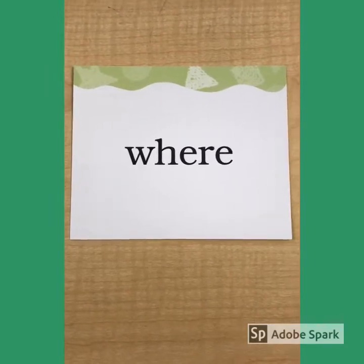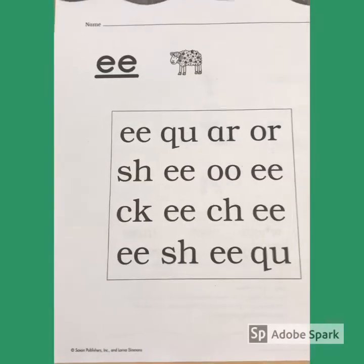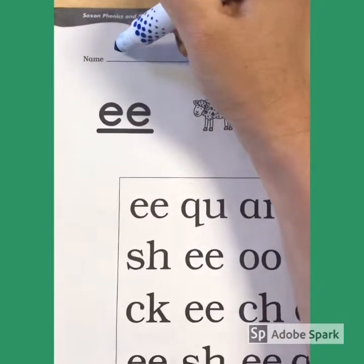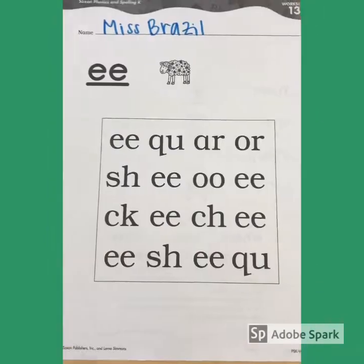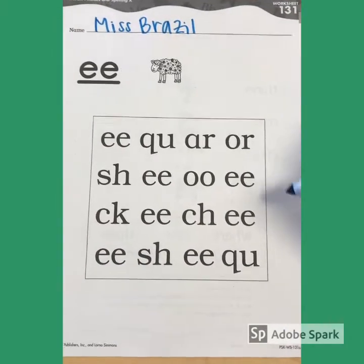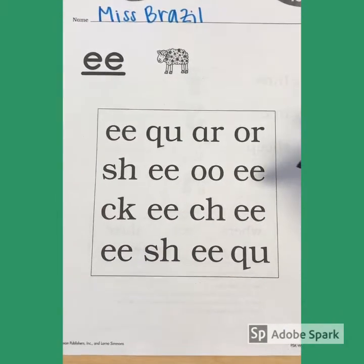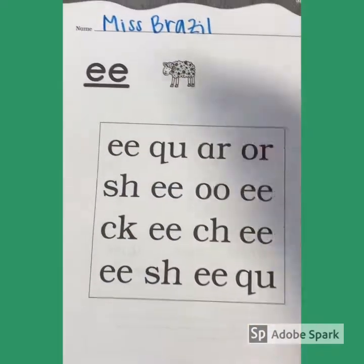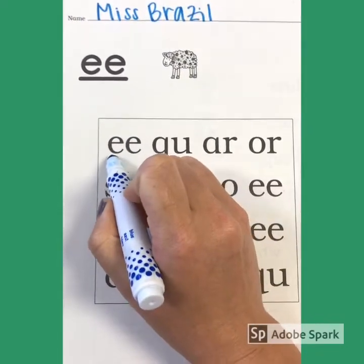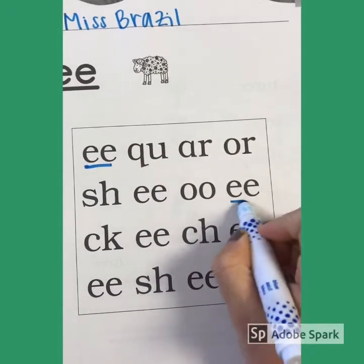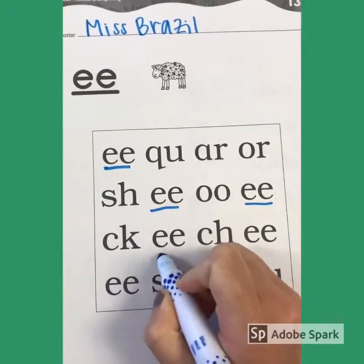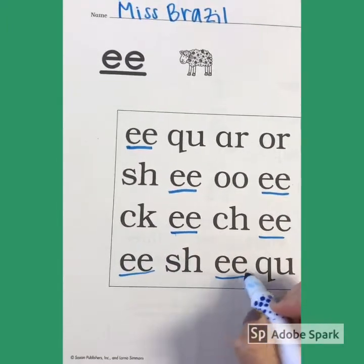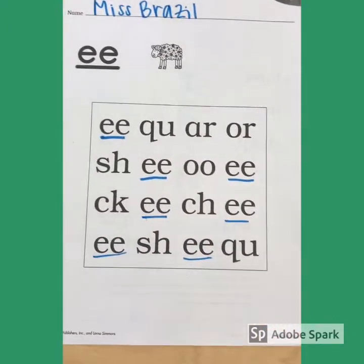You can pause the video right here while you do that. Then you can get out your worksheet 131 and put your name at the top. I want you to look at the box and underline all of the digraph EEs that you see. Once you're done with that, flip your paper to the back and we'll work on that together.